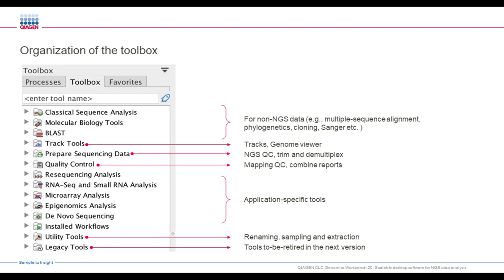Then you have resequencing analysis, RNA-seq and small RNA, microRNA, epigenomics, and installed workflows. These application-specific tools are populated when you download the workbench and also when you download specific plugins. Utility tools allow you to process objects in the workbench — you can rename, sample reads, extract reads from certain areas in your genome browser, and so on. Legacy tools are tools that will be retired in the next version, just to give fair warning.